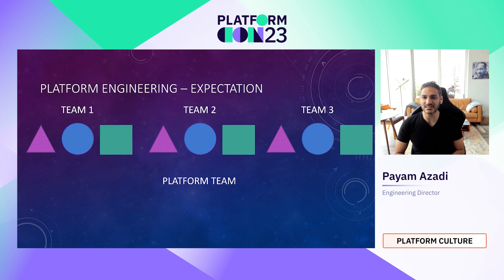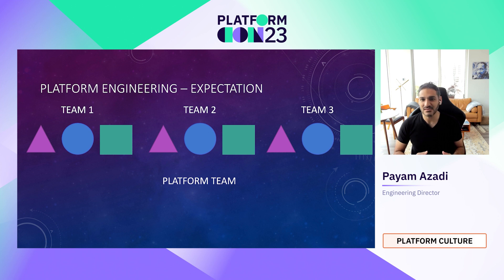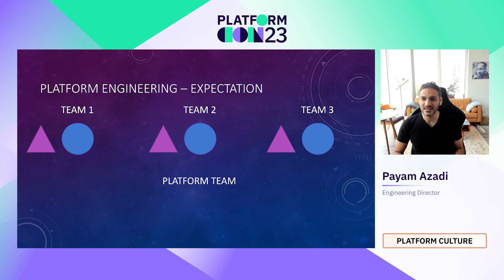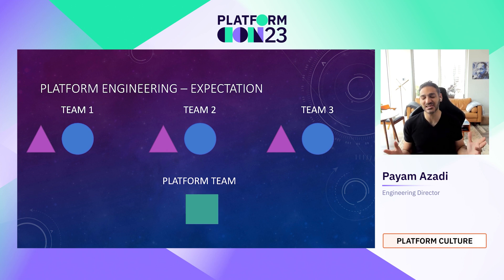Here's how platform and SRE teams usually get advocacy and funding: we have several teams all solving the same problems. Each shape represents a different DevOps problem, and each distinct shape of the same color is the same size. The idea is to take one of these problems, solve it once, and now that's one less thing every team has to worry about. Magic. But you will find out — maybe quickly, maybe not so quickly — that reality usually isn't that simple.